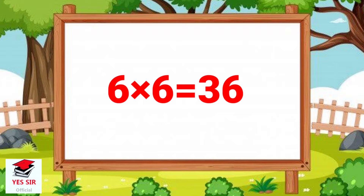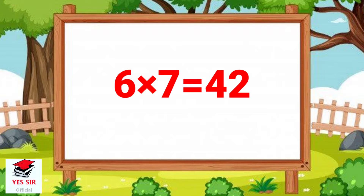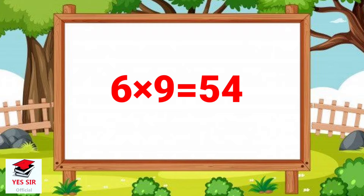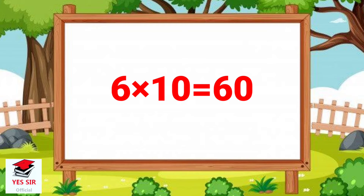6 and 6 is equal to 36. 6 and 7 is equal to 42. 6 and 8 is equal to 48. 6 and 9 is equal to 54. 6 and 10 is equal to 60.